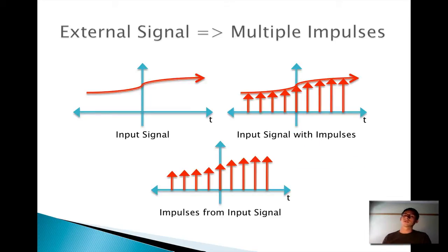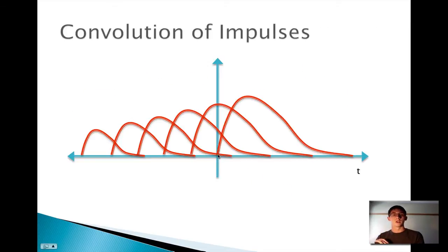This impulse could just at one point, it could be a sample of a single point in an input signal. So if you get an external signal, an input, as you can see in the top left, what we can do is sample it out into many different impulses. And what we get is just a line of multiple impulses.